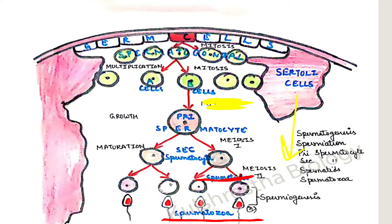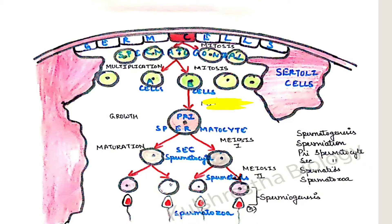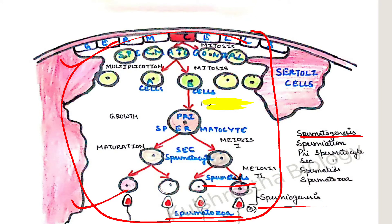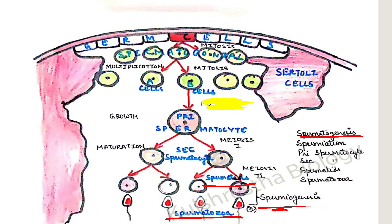Now some differentiation occurs — spermatids get differentiated and form spermatozoa. Morphological changes take place in spermatids, and this process is called spermiogenesis — the formation of spermatozoa from spermatids. Spermatogenesis is the whole process — the formation of spermatozoa from spermatogonial cells. Spermiogenesis is the smaller step within it — just the formation of spermatozoa from spermatids. So these two terms are related but different.